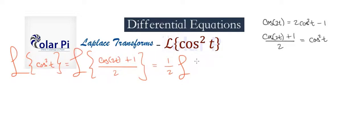What we have is the Laplace transform of cosine 2t, and then plus a half times the Laplace transform of 1. So I've used the other property of the linear operator, which is splitting it over sums and differences.